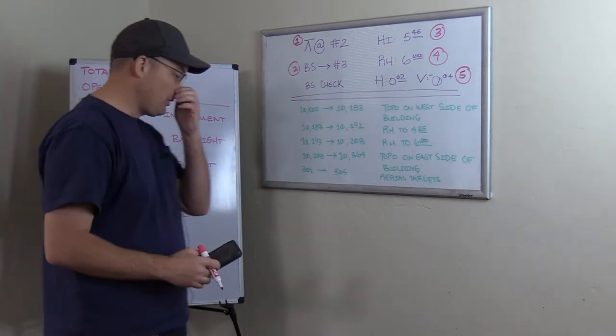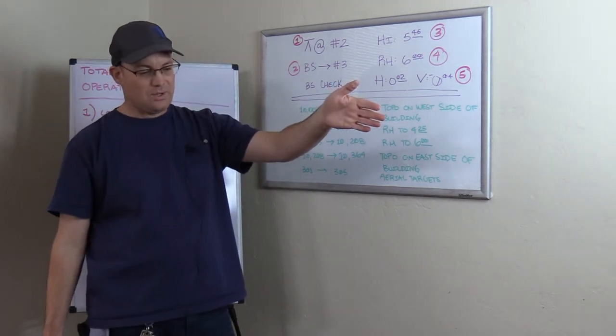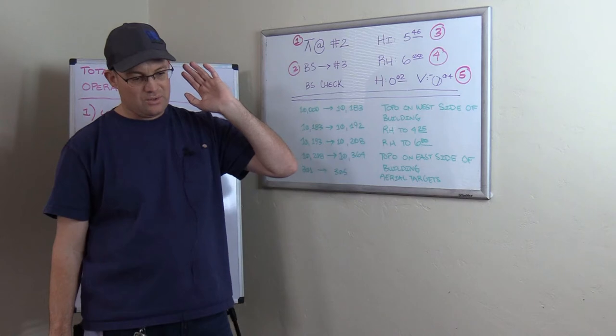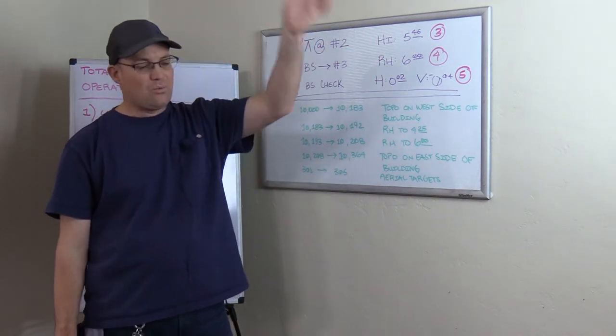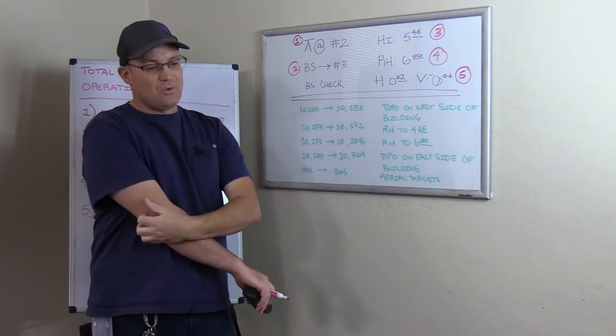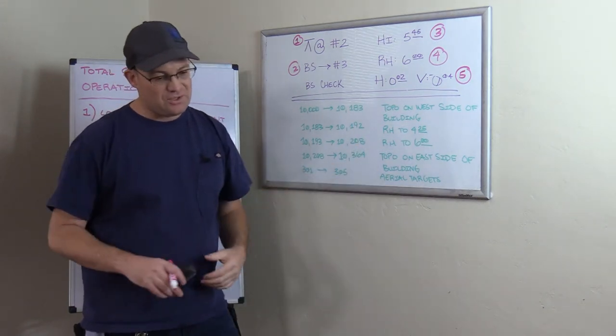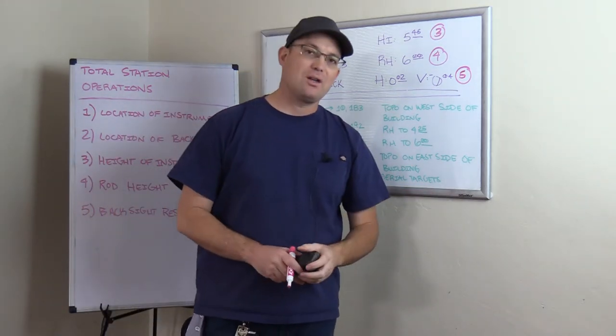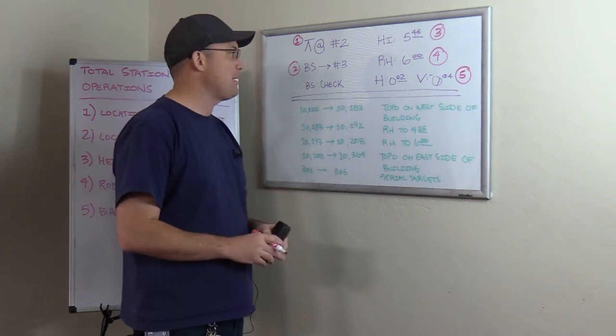Now there's some information collected by the total station that we don't write down on the station setup. So what don't we write down? We don't write down the horizontal angle, which is usually zero on the station setup. We don't write down the slope distance that we measure between the two points. And we don't write down the zenith angle or the vertical angle between the two points. Why not? Well, we don't do that because that information is directly observed or calculated by the total station or the data collector. So we don't make the crews write that down on paper.